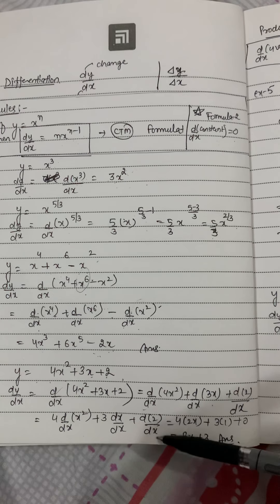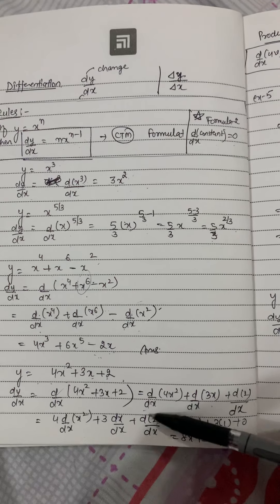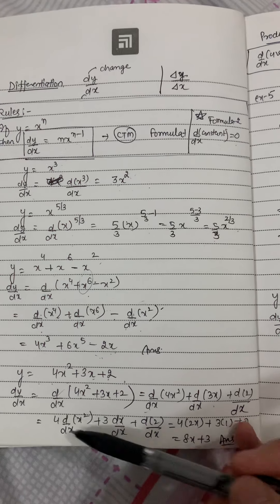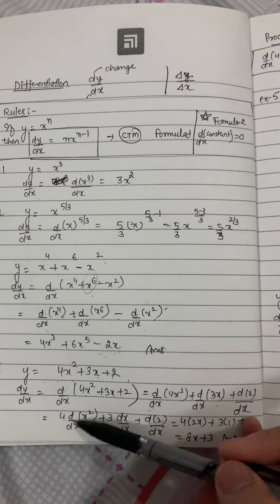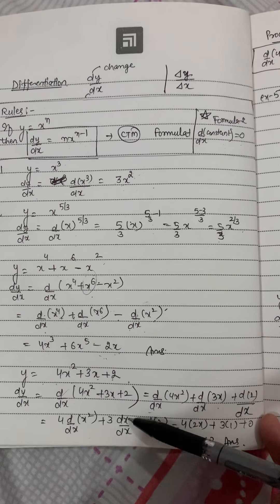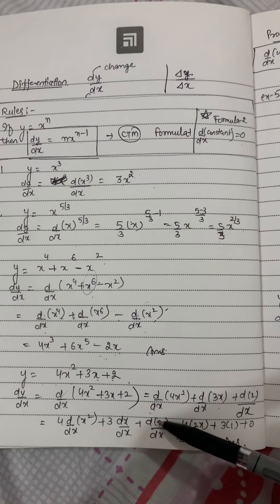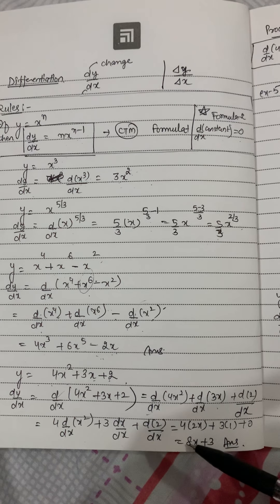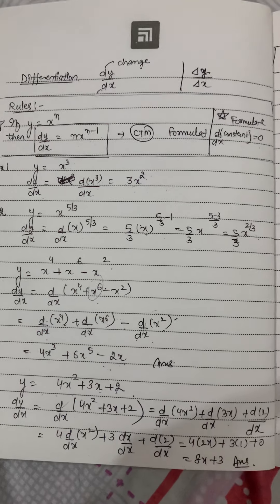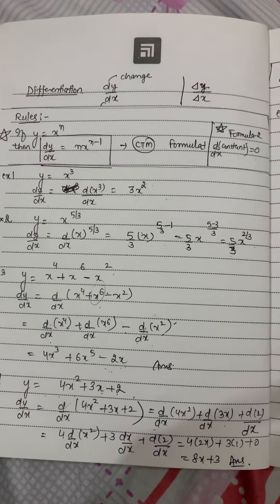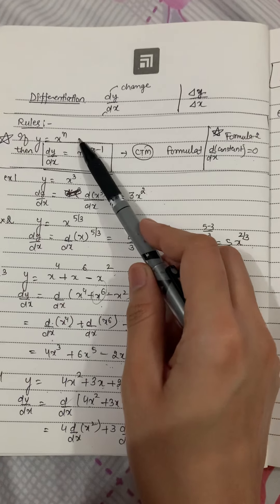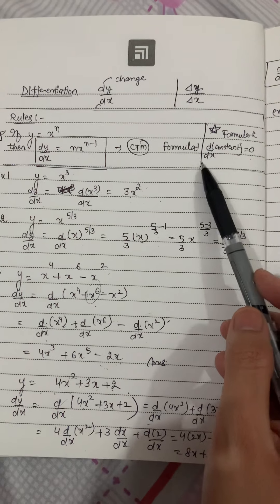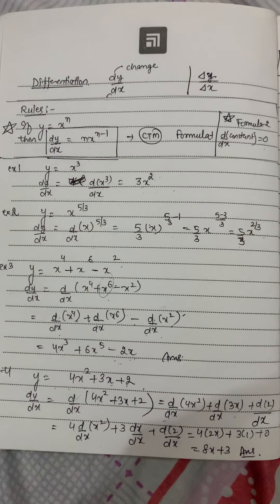The derivative of the constant 2 is 0. Now solving: the derivative of x squared is 2x, so 4 times 2x gives 8x. The derivative of x is 1, so 3 times 1 gives 3. And the derivative of 2 is 0. The final answer is 8x plus 3. Hopefully this session on the power rule formula nx to the n minus 1 and the derivative of a constant being 0 is clear. Thanks for watching.